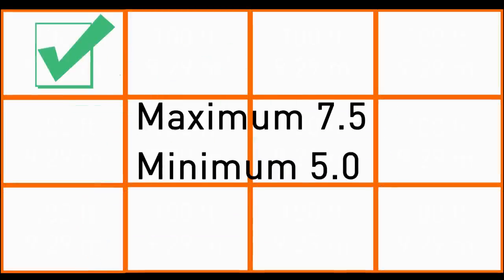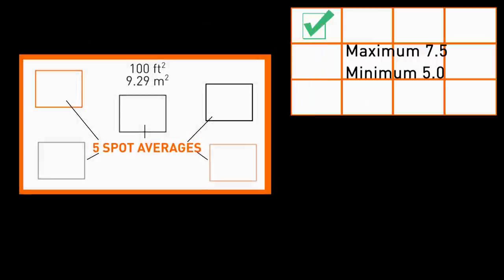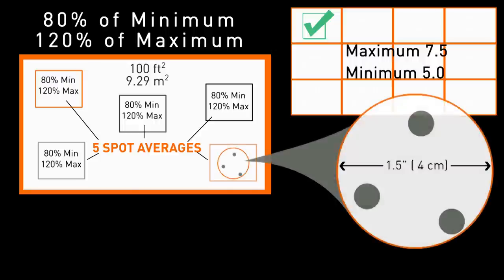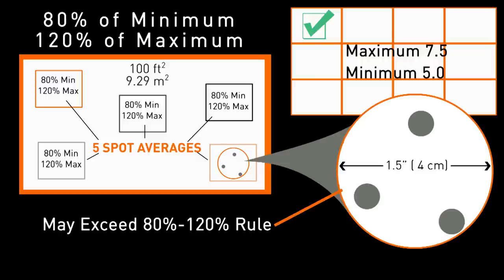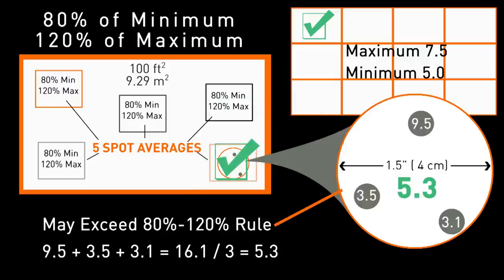Recapping. The area average must adhere to the standard minimum and maximum. So as long as this is true, each underlying spot has a leeway of 80% of the minimum or 120% of the maximum. And what about the gauge readings? Those have the greatest leeway and can be even outside the 80% to 120% allowance as long as their combined 3 gauge average produces a spot conforming to and within the 80 to 120% standard.